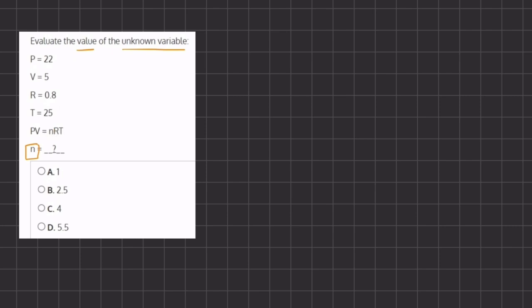We are going to plug in p which is 22 times v which is 5 equals n, our unknown variable, times r which is 0.8 times t which is 25.